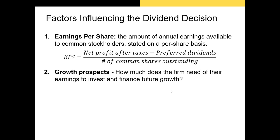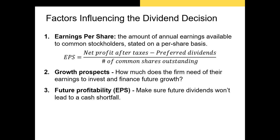Another factor is the firm's growth prospects. Firms with good growth prospects will likely need to invest money to take advantage of them. For example, if Tesla were expanding into Sub-Saharan Africa, it would need more factory capacity and employees — all of that takes money. If Tesla paid out a dividend, it would have less cash to invest in that expansion. This is why firms with good growth prospects are actually less likely to issue dividends. Future expected profitability is also positively related to dividend payouts.